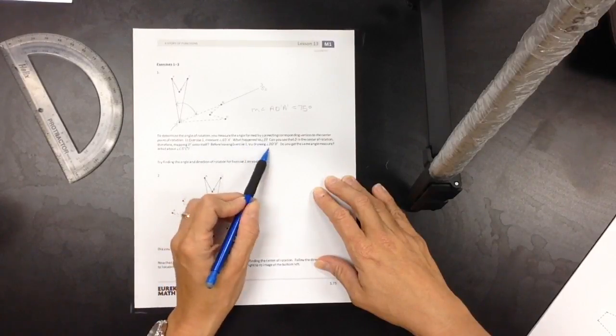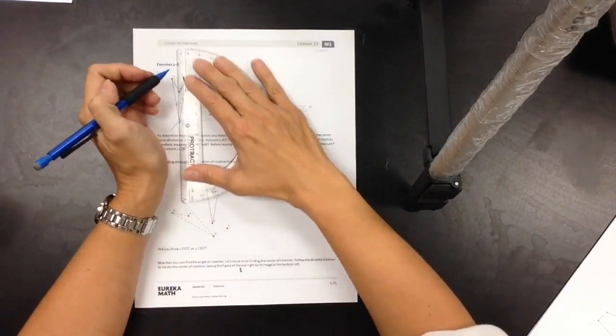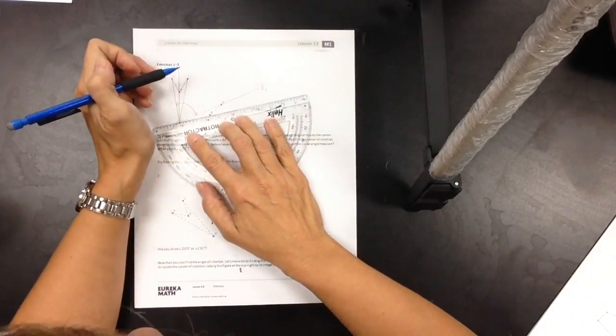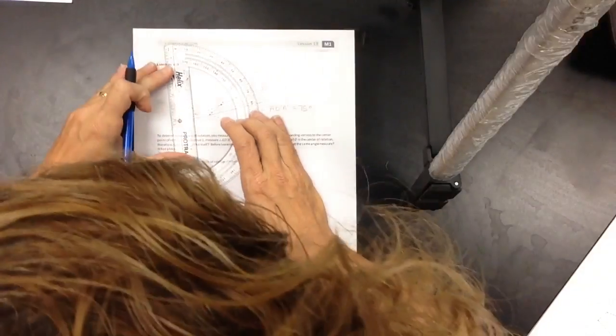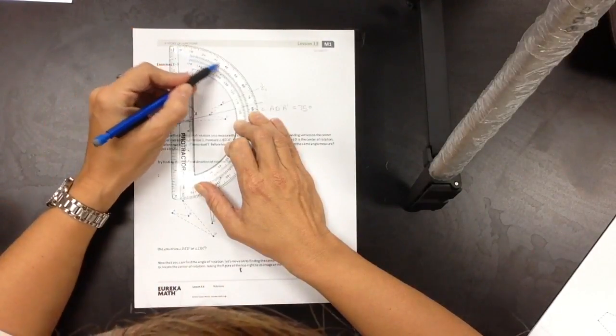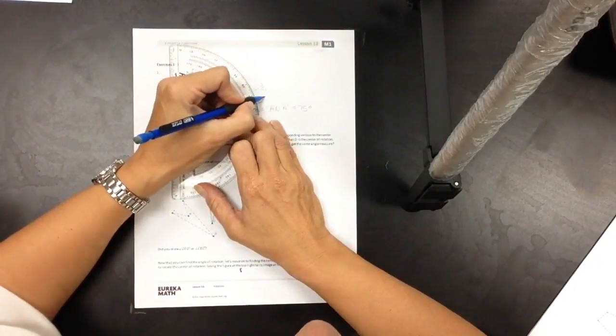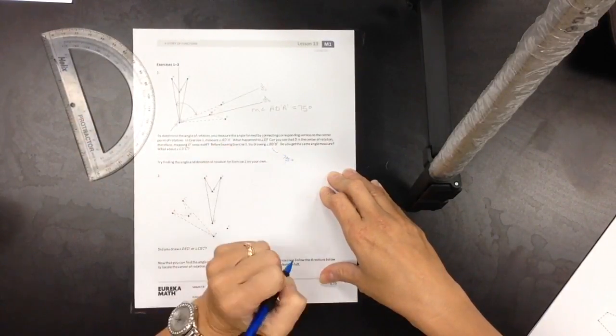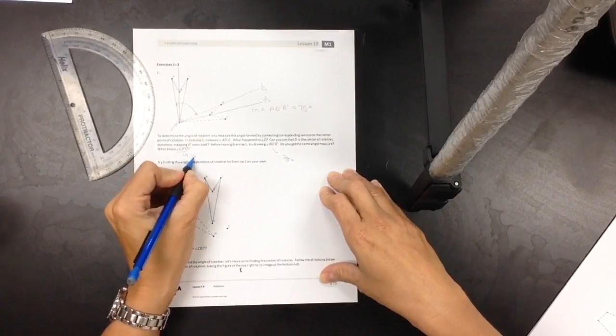Before leaving exercise one, try drawing B, D prime, B prime. Do you get the same angle measure? So let's draw that. Should we get the same angle measure? Yes, we should. So again, D and D prime, we're going to go in that little hole. I'm going to follow along there. So this is the zero angle and then we're counting up to here, which is, looks like my drawing's a little off. I got 76 and a half, but we know that it should be 75 degrees. So 75 degrees. What about C, D prime, C prime? It will also be 75 degrees.